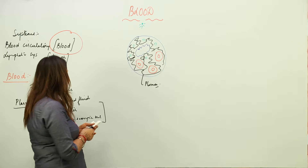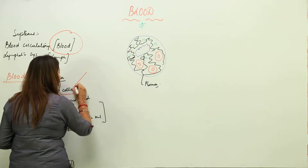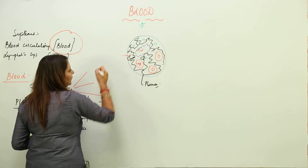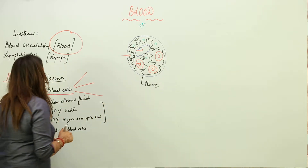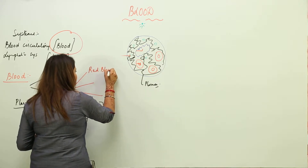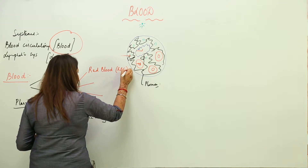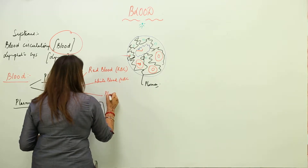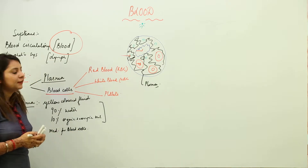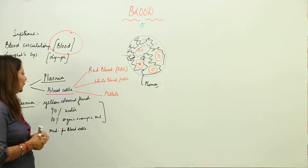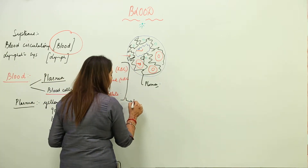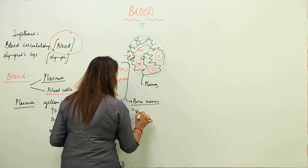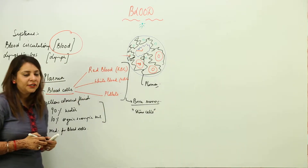Coming to the blood cells — we mainly have three kinds. These are red blood cells, white blood cells, and platelets. All these cells are actually formed in the bone marrow, that is the cavity of the long bones. They are formed in bone marrow by specialized cells called stem cells. This is a common characteristic to remember.